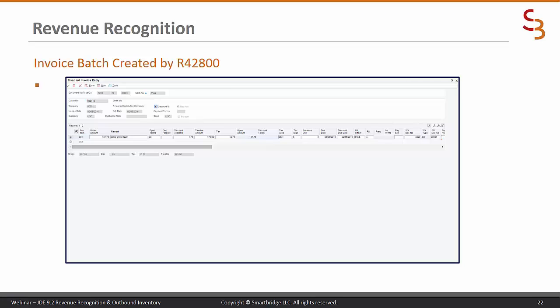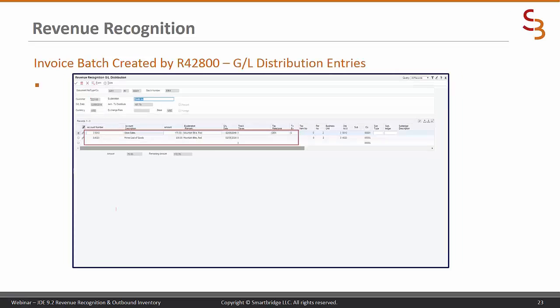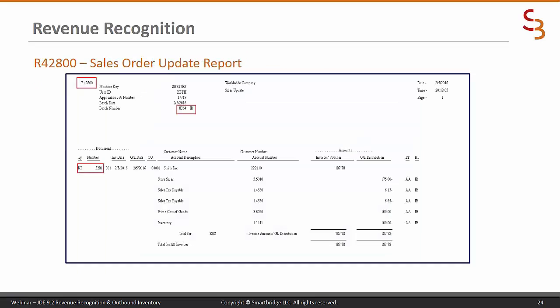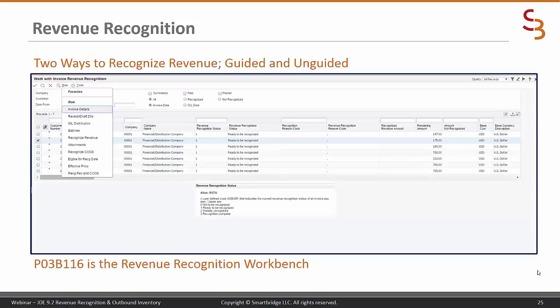Here is the invoice batch created when I ran R42800, the sales order update. This is the invoice line, and these are the GL distribution entries visible in this batch. However, these are not the revenue recognition entry lines — those cannot be seen in this batch, though they do exist. This is the R42800 sales order update report, and again you will not see the revenue recognition entries in this report.